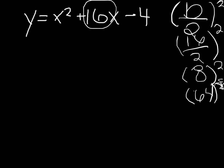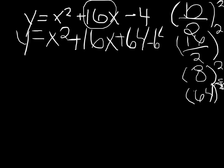So we're going to put the 64 in. We put it right next to the 16x, and we're going to plus 64, minus 64, and then add the minus 4 in.